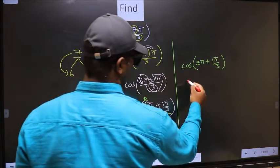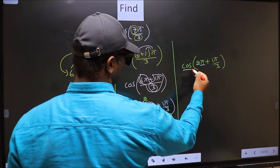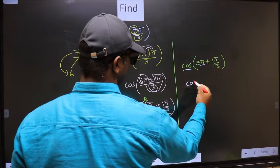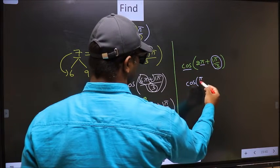Next. Cos. Here we have π. So, cos is not going to change. It will remain cos. And inside, we get this angle, π by 3.